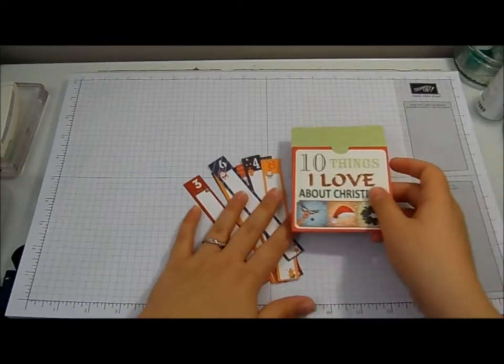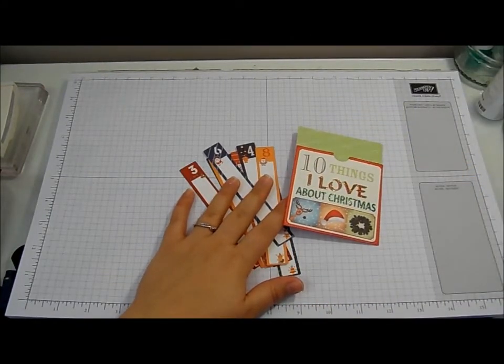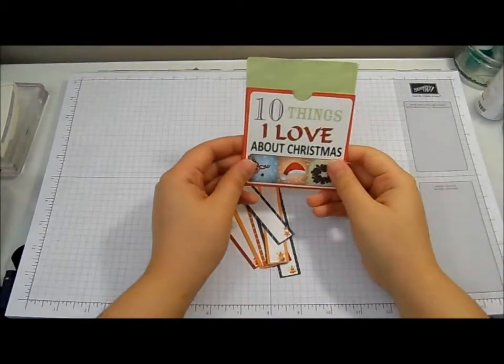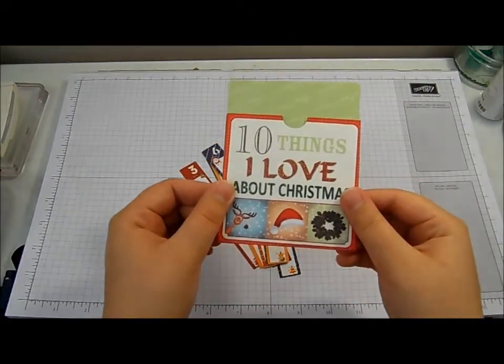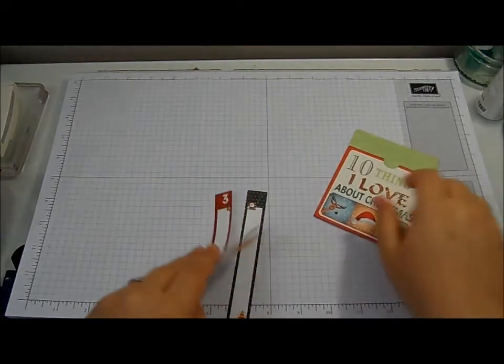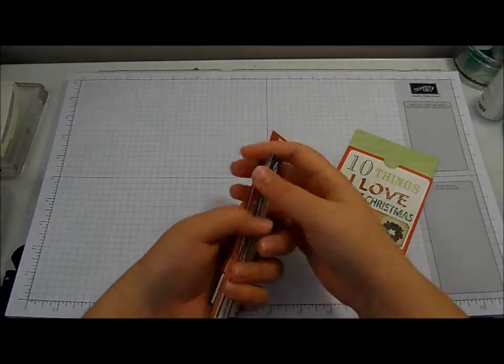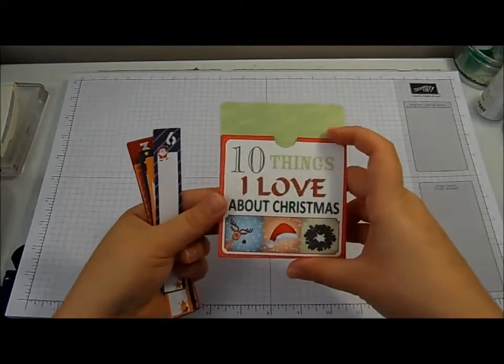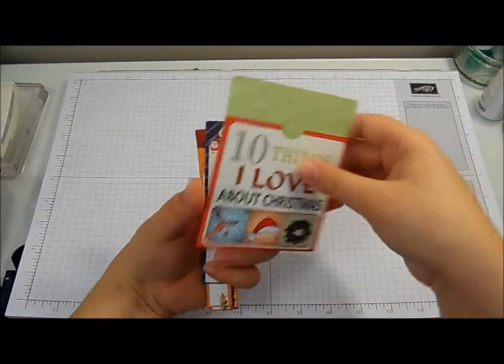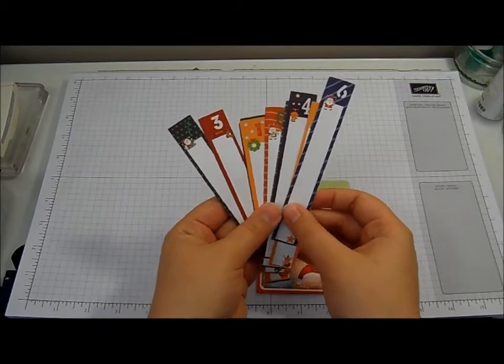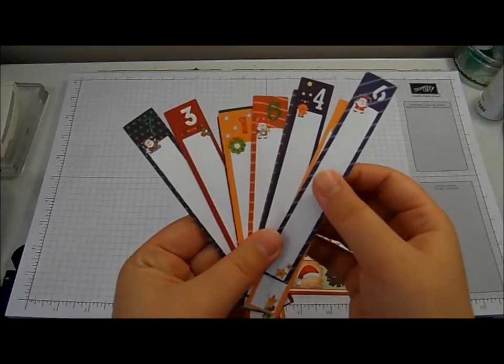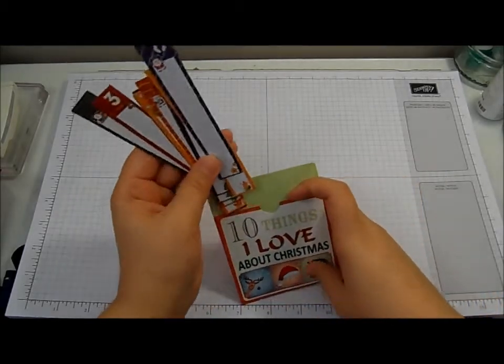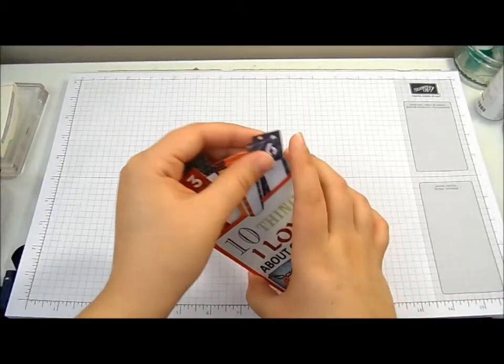I was in my local craft supply store this morning and I spotted this. I thought it was really cute and it only cost me a pound. It's a lovely little pocket that says '10 things I love about Christmas' with 10 little tags with cute details on, and it's really sweet. It's not too bad, but I could so easily do that myself.